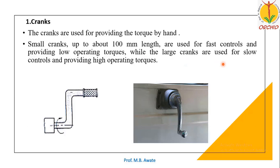Larger cranks are used for slow controls but they provide high operating torques. So the take away is: if the crank is small, it can be used for fast controls but has low operating torque. When using a large crank for slow operations, those large cranks will provide high operating torques.